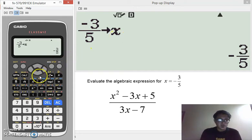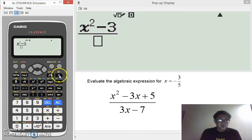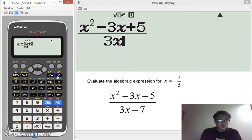So, to evaluate the expression, all we need to do is to type the expression as it is using the variable. So, you have x squared right there, minus 3x plus 5 over 3x minus 7.